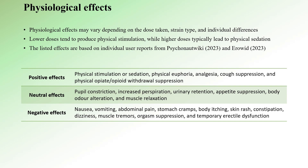Neutral physiological effects include pupil constriction, increased perspiration, urinary retention, appetite suppression, body odor alteration, and muscle relaxation. On the flip side, negative physiological effects can include nausea, vomiting, abdominal pain, stomach cramps, body itching, skin rash, constipation, dizziness, muscle tremors, orgasm suppression, and temporary erectile dysfunction. Remember that these effects can vary from person to person due to numerous factors.